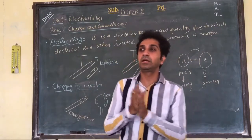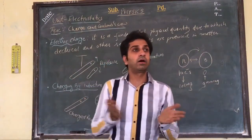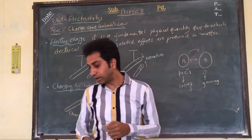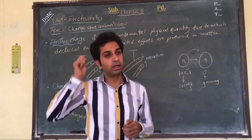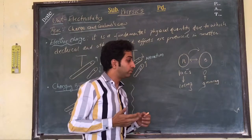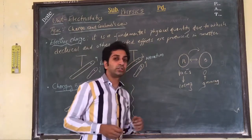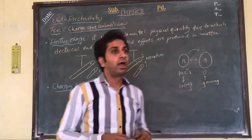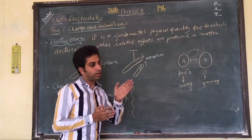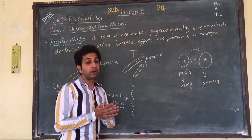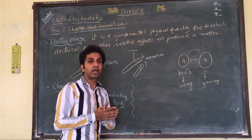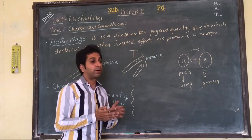One simple method: rub any two bodies together. For example, if I rub a scale with my hair, the scale gets charged. This is called charging by friction. In friction, you need to rub two bodies and the charge from one body goes to the other. Physical contact is required between both bodies for them to get charged by friction.